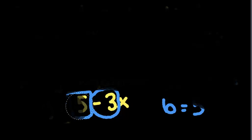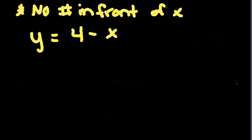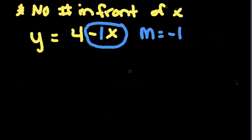A couple other things to keep in mind while doing this is there won't always be a number in front of the x. So you might have y equals 4 minus x. If that's the case, then if we look at which one has the x, here's the x, so we're going to circle that. So that's going to be the slope. But what number is here in front of the x? Well, if there's no number in front of the x, then it's assumed to be a 1. So my slope would be a negative 1. My y-intercept would be 4.